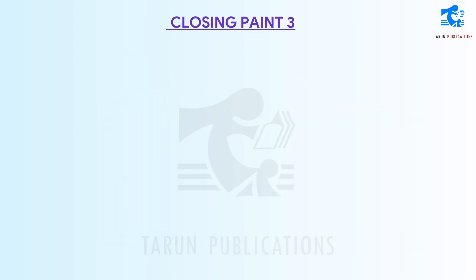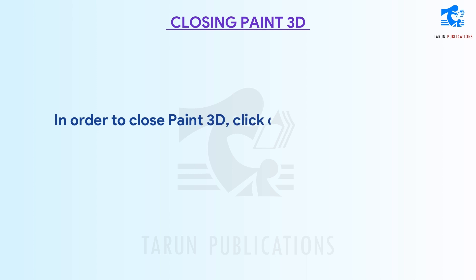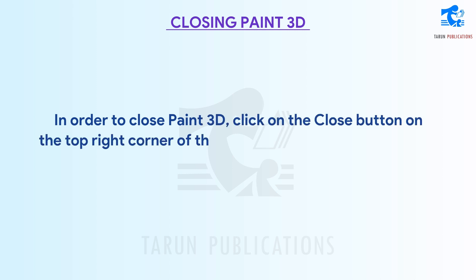Closing Paint 3D. In order to close Paint 3D, click on the Close button on the top right corner of the window. Paint 3D will be closed.